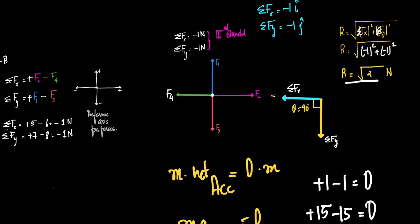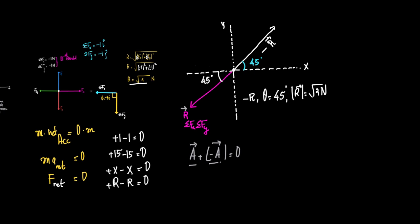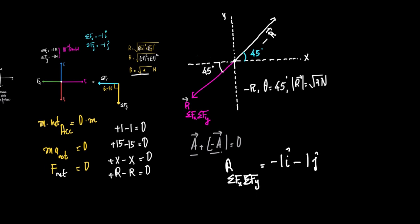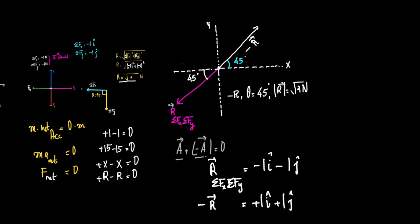If you want to write this in pure vector form: the resultant of sigma Fx and sigma Fy is minus 1 i-cap minus 1 j-cap. Therefore, minus R — the negative of this — is plus 1 i-cap plus 1 j-cap, acting at an angle theta equal to 45 degrees.